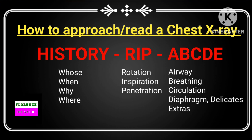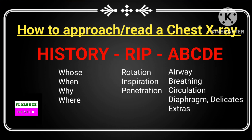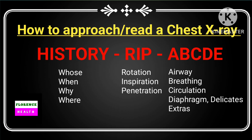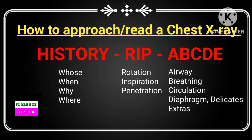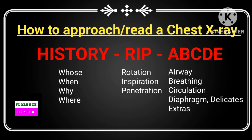In RIP: R means rotation — check if the X-ray is rotated; if it is, ask for a fresh one. I is for inspiration — check that it is an inspiratory film; if expiratory, ask for a fresh one. P is for penetration or exposure — check whether it is underexposed or overexposed; if so, ask for a fresh one.